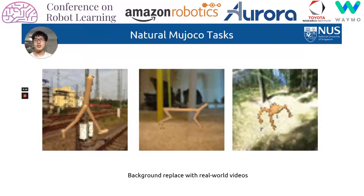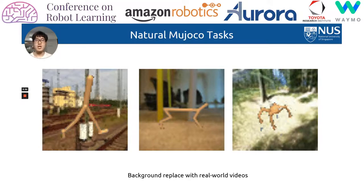We evaluate CBRL on a set of challenging locomotion control tasks defined in the DeepMind Control Suite. To simulate complex backgrounds, we introduce NaturalMutical, where we replace the original simple background with natural videos sampled from the ImageNet ILSVRC dataset, which is collected in real-world scenarios. NaturalMutical is more challenging because of the complex background compared to the standard control tasks.